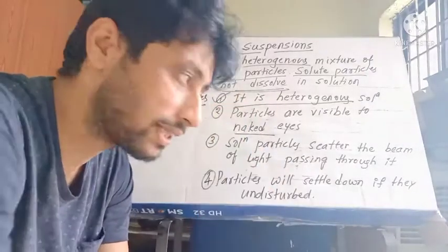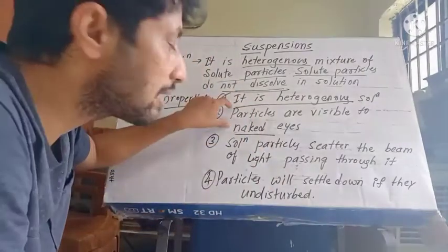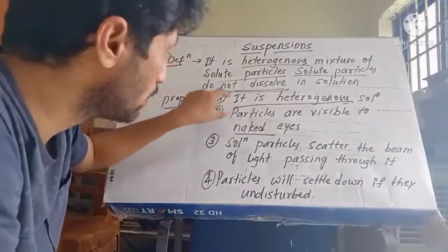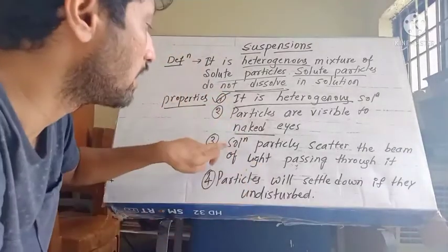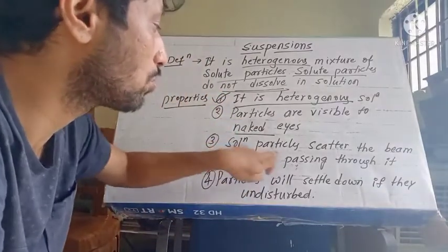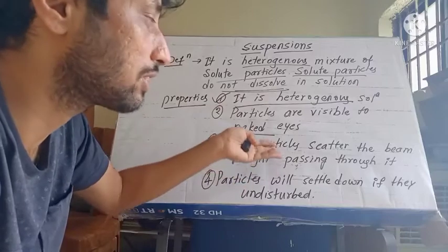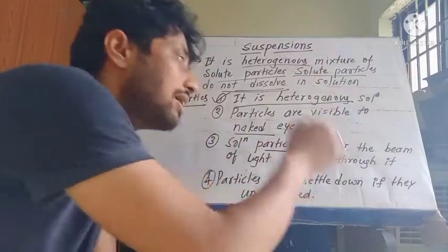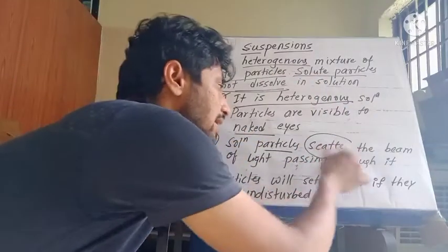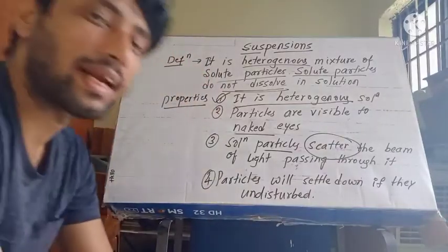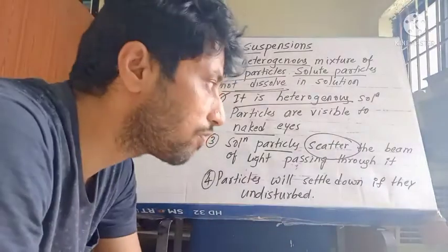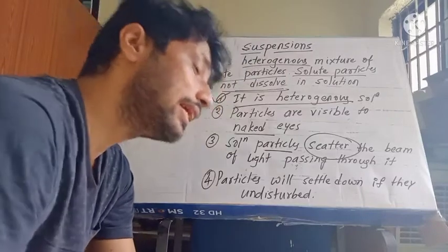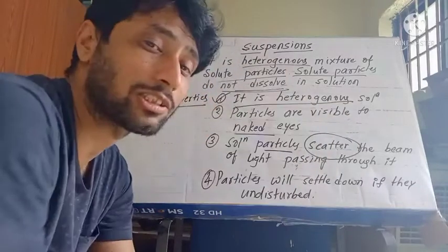The third property: the particle size is bigger in a suspension. Because the particle size is big, the particles present in the solution will scatter the beam of light. Scattering means it will change the direction of light when the light passes through the suspension.